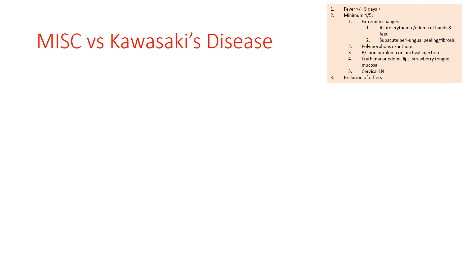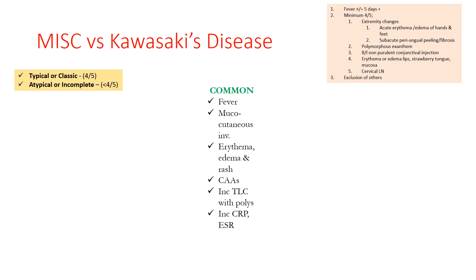Kawasaki's disease is typical or classic if 4 of the defining 5 features are present, and atypical or incomplete if fewer than 4 features are present. Common features between MIS-C and KD include fever, mucocutaneous involvement, erythema and edema with rash and extremity skin changes, coronary artery aneurysms, increased total leukocyte count with polymorphic predominance, and increased CRP and ESR.